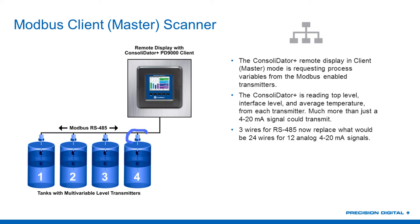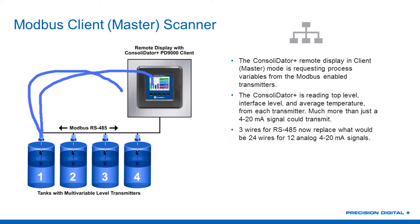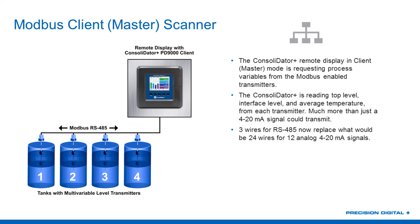In this example, each one of these Modbus multivariable level transmitters is displaying top level, interface level, and average temperature along the probe in four different tanks — a total of 12 process variables. If I were going to do that with 4-to-20 milliamp, I'd have to run 24 wires back to the Consolidator. A much more convenient way is to just run one RS-485 bus line — three-wire 485 running out to all of these transmitters, keeping everything in parallel. The Consolidator Plus is then set up to be the client or master.